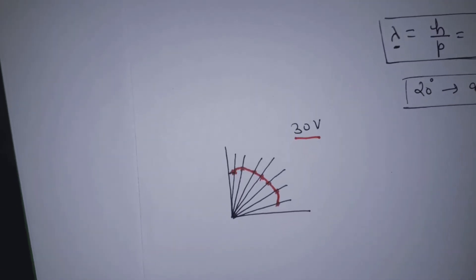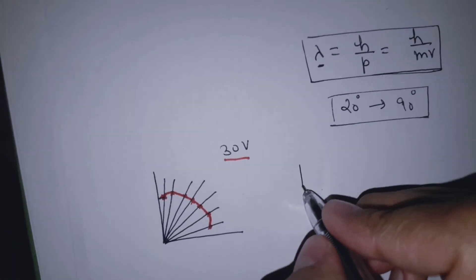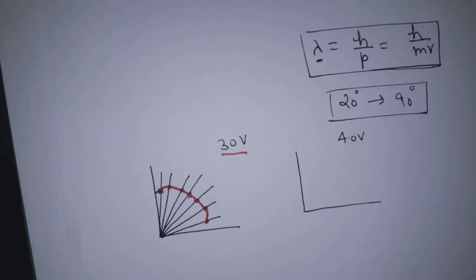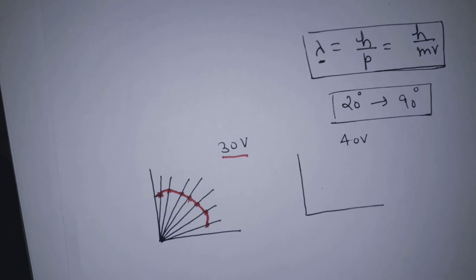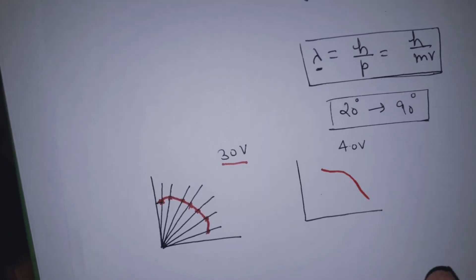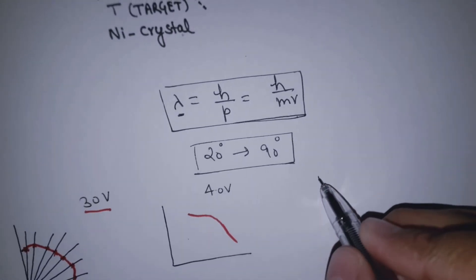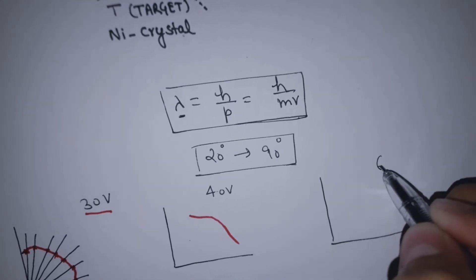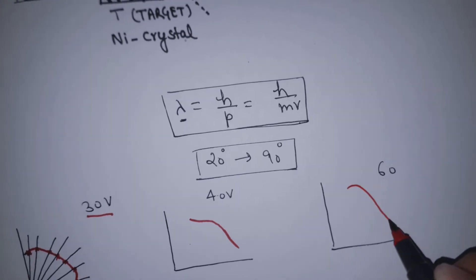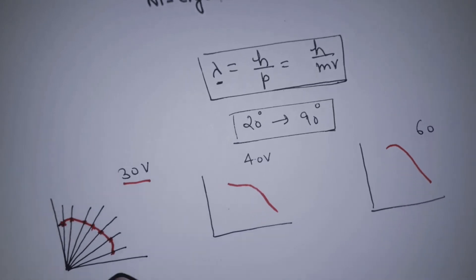They then made the same pattern for 40 volts — the pattern showed a similar shape. Then for 50 and 60 volts, the pattern was again similar. Different voltage patterns were constructed in this way, noting the number of electrons reaching the collector at different angles.